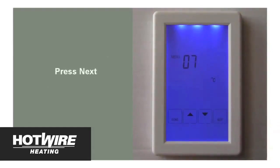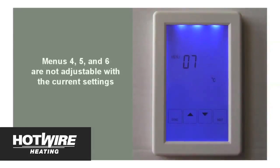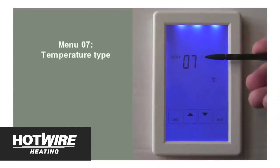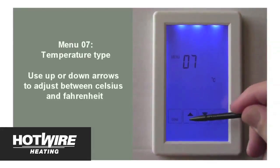Menus 4, 5 and 6 may not be available for programming depending on your unit's installation, which means the next option will be menu 7, which is used to change between Celsius and Fahrenheit. In this case, we will select C for Celsius and press next to move to the next menu.